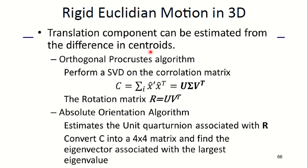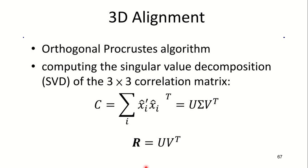Translation component can be estimated from the difference in the centroids. In Orthogonal Procrustes algorithm, we perform SVD on the correlation matrix. C is the correlation matrix which is the summation of x'_hat · x_hat^T, which equals UΣV^T. The rotation matrix R is given by U · V^T. In Absolute Orientation algorithm, we estimate the unit quaternion associated with R. You convert C into a 4×4 matrix and then find the eigenvector associated with the largest eigenvalue.